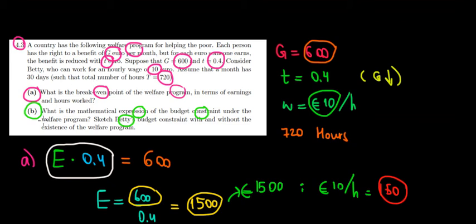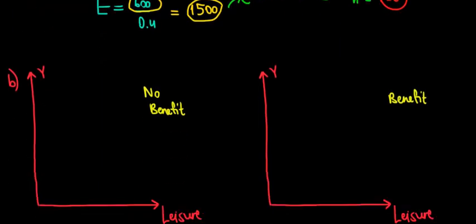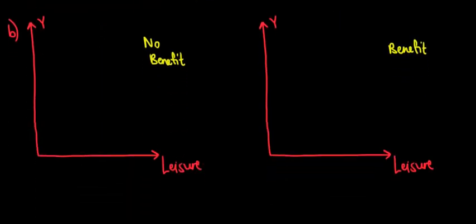Let's work on part B in this video. The question asks for the mathematical expression of the budget constraint with the welfare program and to sketch them with and without the welfare program. Let's start with the case when we don't have the welfare program — meaning we don't have that benefit of 600 euros.